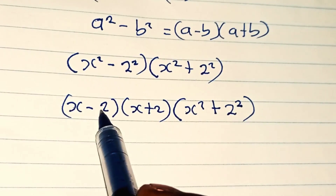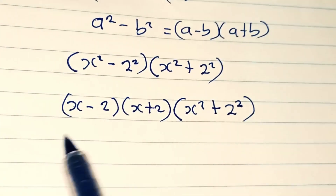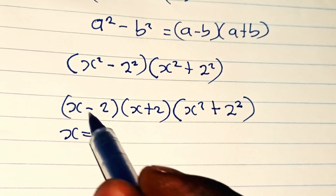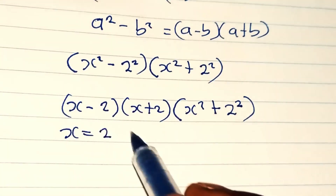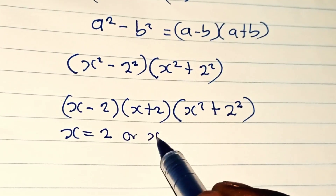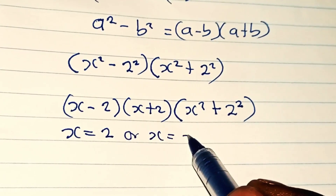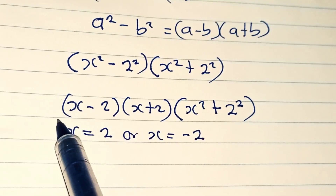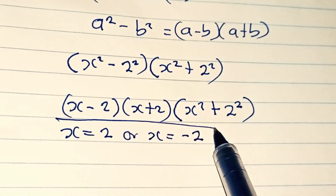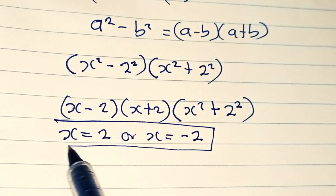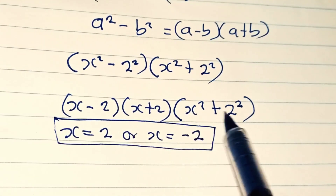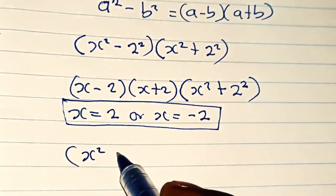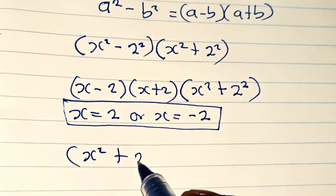From here, either from the factor (x minus 2) or (x plus 2), either x is equal to positive 2 or x is equal to negative 2. So we have two real solutions from this part.